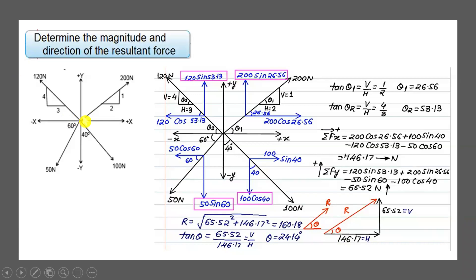For the 200 N force, let theta 1 be the angle of inclination with the horizontal. By trigonometry, tan theta 1 equals vertical divided by horizontal, which is 1/2. So theta 1 equals tan inverse of 0.5, which equals 26.56 degrees. The inclination of the 200 N force with the X axis is 26.56 degrees.